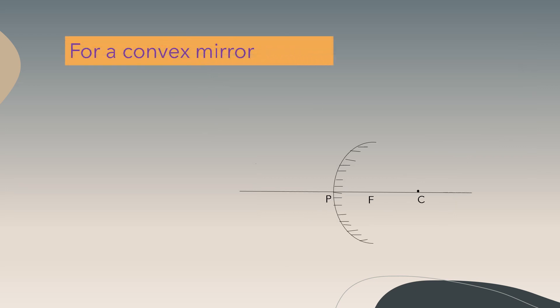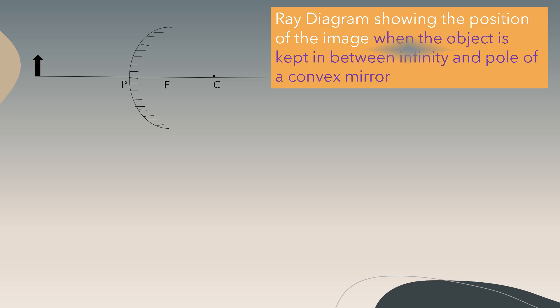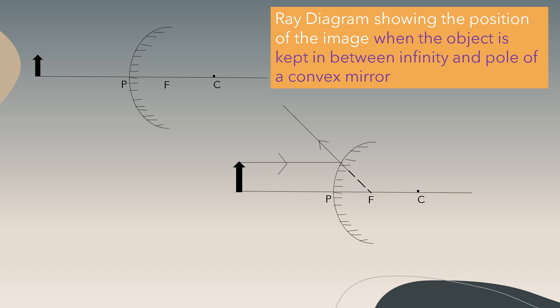Now, for a convex mirror, the ray parallel to the principal axis always diverges, and the extension is made to the focus. Let's see the ray diagram showing the position of the image when the object is kept between infinity and the pole of a convex mirror. The ray parallel to the principal axis will diverge and the extension is made to the focus.